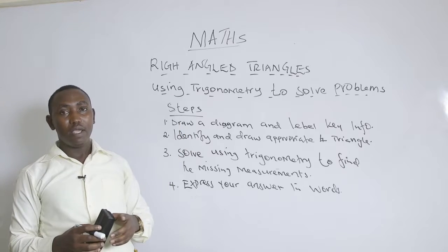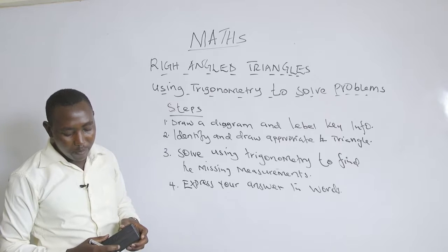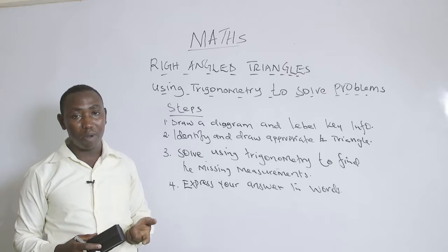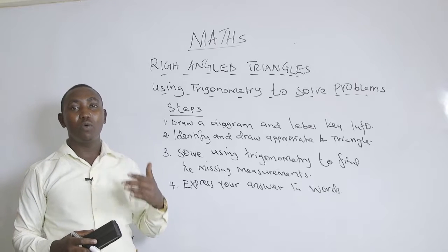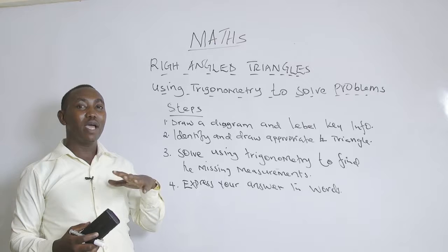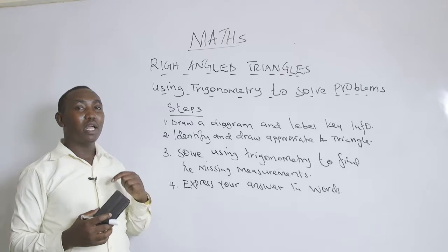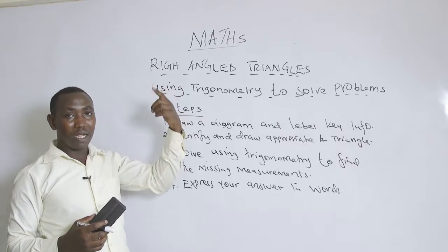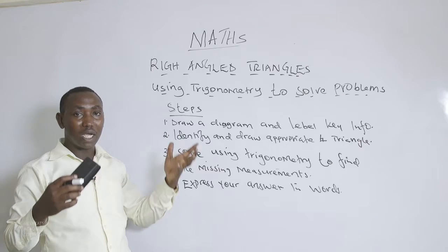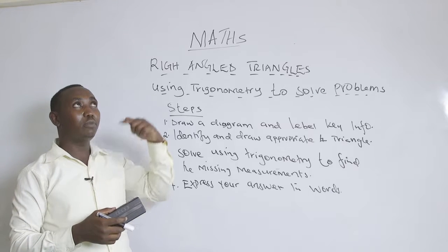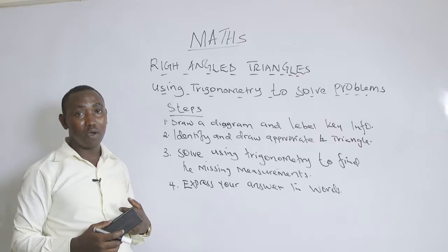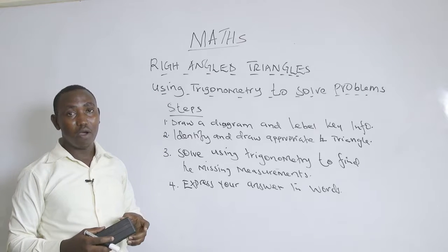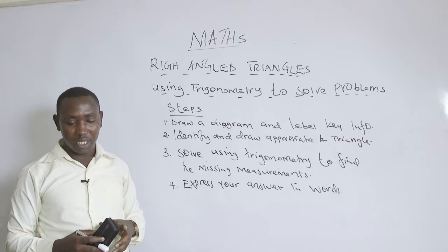There are key messages to understand when solving trigonometry problems — particularly to do with the angles in question. When a person is standing, they can observe an object upward or downward. If a person is on top of a building, cliff, or structure, they can observe an object either up or down. There are angles made between the eye of this individual and the object in question — those are the two angles we want to consider.